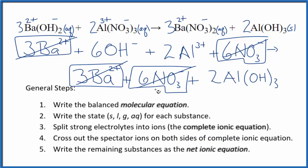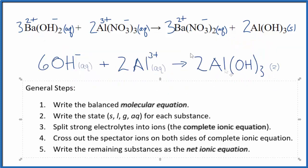I'll clean it up, write the states. We'll have our net ionic equation. So this is the balanced net ionic equation for barium hydroxide and aluminum nitrate.